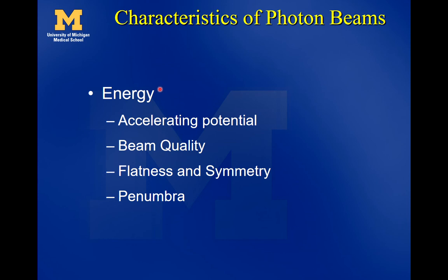All of these characteristics are used to describe our photon beams used for treating patients. One of the most important things about the x-ray beam is the accelerating potential — 6-MeV versus 16-MeV accelerating potential will produce very different x-ray beams, so it's critical to know which energy we're treating with. This also relates to beam quality, a jargon term that tells us how high or low energy the x-rays are in the spectrum for different MV x-ray beams.